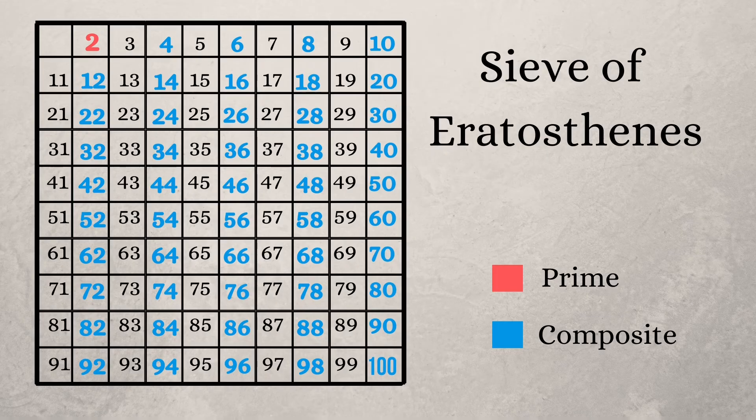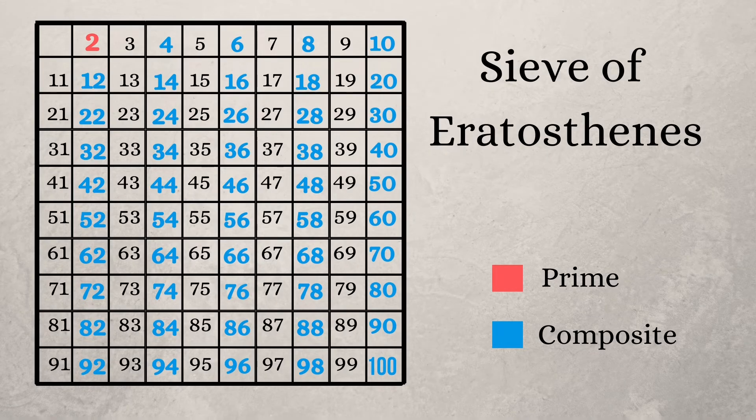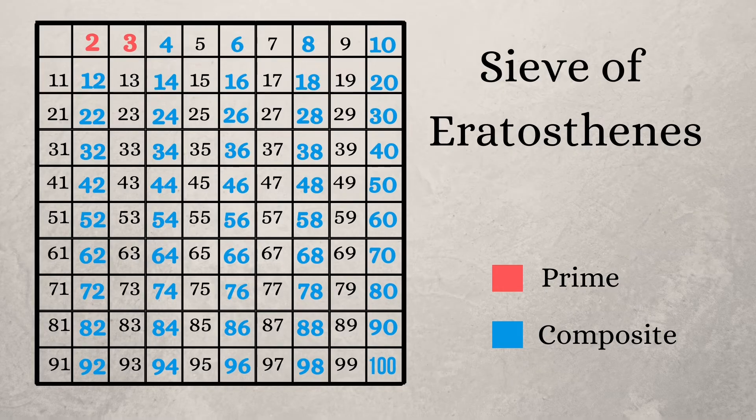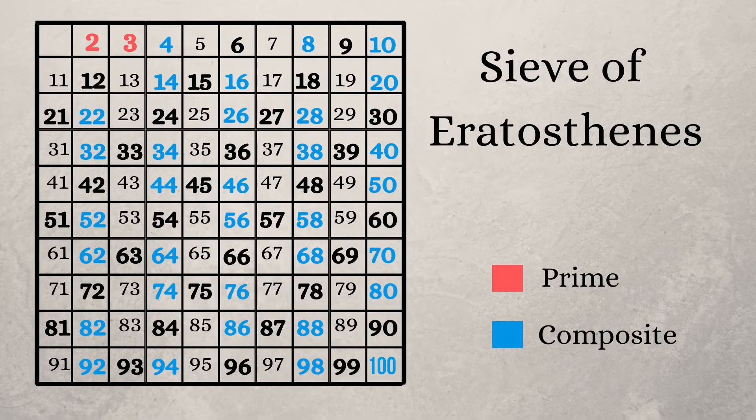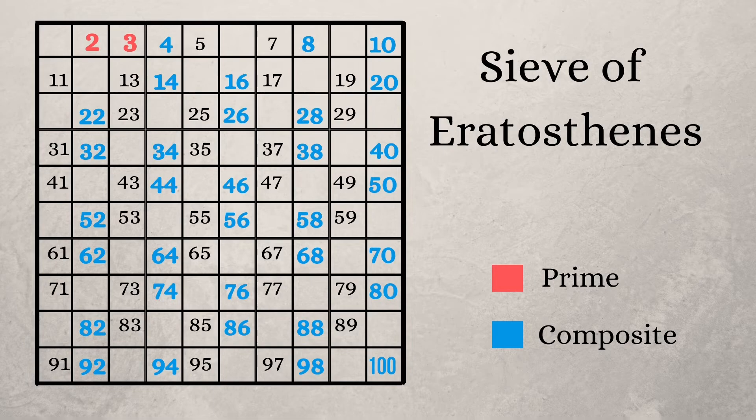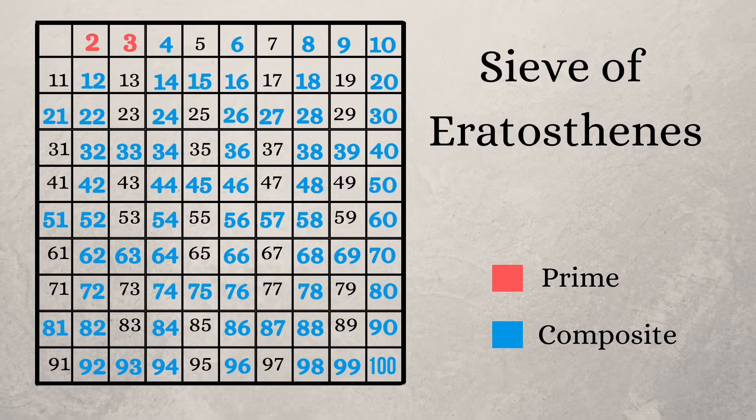Next we consider the succeeding unmarked number, which is three, and mark it as a prime number. Next, find out all the multiples of three and mark all of them as composite numbers.